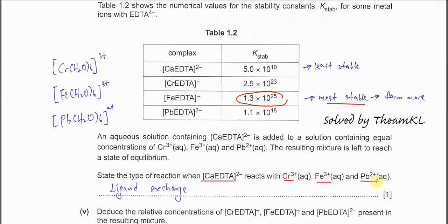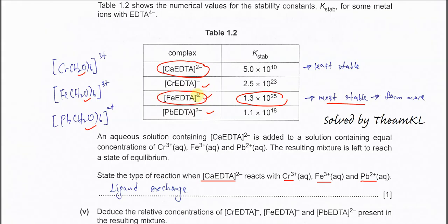State the type of reaction when calcium–EDTA reacts with the chromium, iron, and lead(II) solutions. Initially, the chromium, iron, and lead solutions have only H2O as ligands. When EDTA is present, it substitutes these H2O ligands to form the new complex. This type of reaction is called ligand exchange.